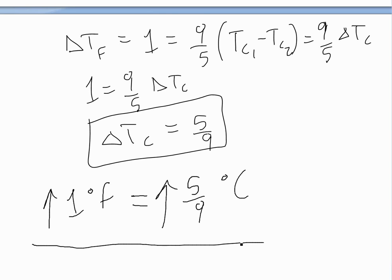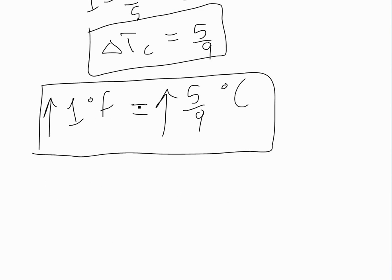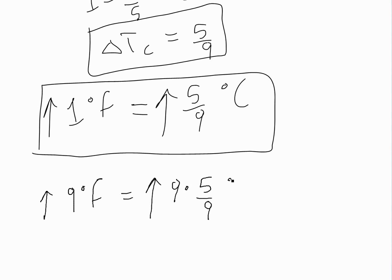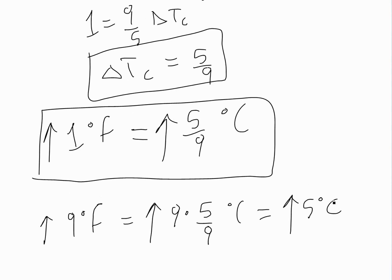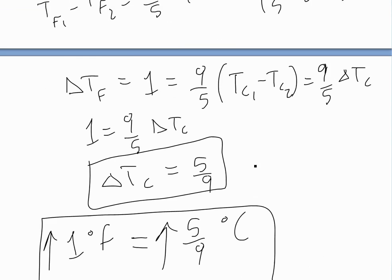This is useful to memorize. For example, if the temperature increases by 9 degrees Fahrenheit, you multiply by 5/9 to get the Celsius change: 9 × (5/9) = 5 degrees Celsius. So a 9°F increase corresponds to a 5°C increase — the Celsius change is almost half the Fahrenheit change.